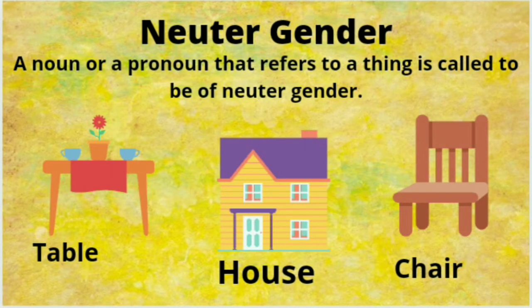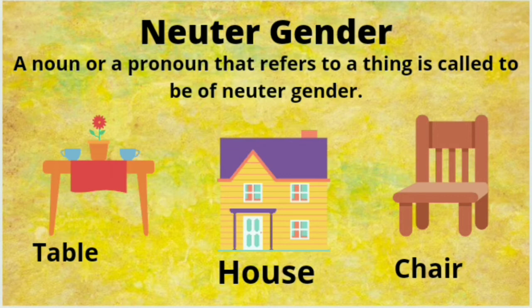Next comes neuter gender. A noun that denotes a non-living thing is said to be of neuter gender. Or we can say a noun or pronoun that refers to a thing is called to be of neuter gender. They can neither be male nor female. Like table, house, chair, school, gold, wood, car.